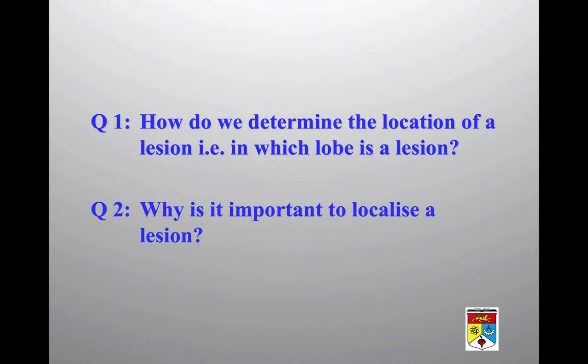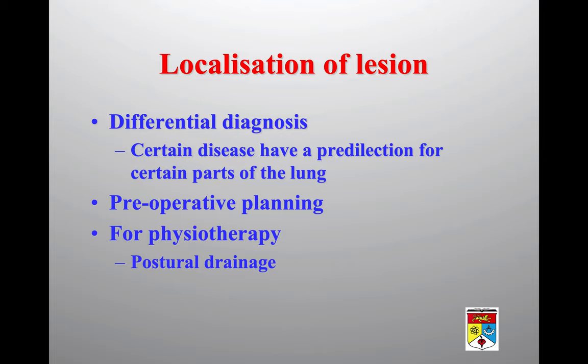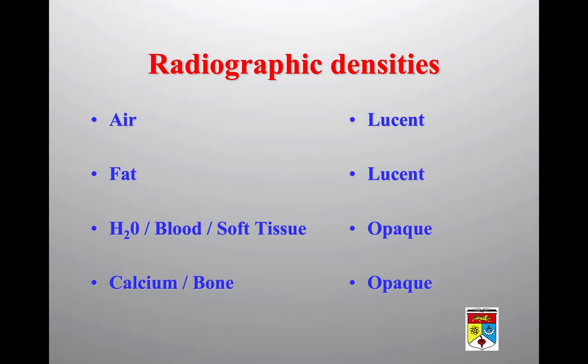In consolidation, determining the location — i.e., which lobe — is important because certain diseases have a predilection for certain parts of the lung. It also assists preoperative planning, so the surgeon knows which lobe to remove, and helps chest physiotherapists with postural drainage — knowing which lobe requires mucus clearance just from the chest X-ray. This requires understanding basic radiographic density and lung anatomy.